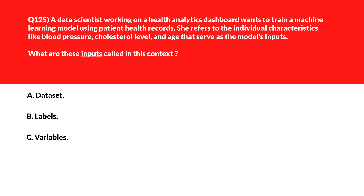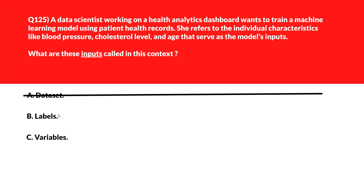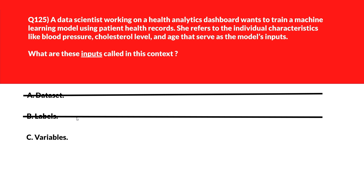Now let's look at the question about inputs to a machine learning model. Option A is Dataset — dataset refers to the full collection of data, not individual inputs themselves, so it's incorrect. Option B is Labels — labels represent the known output values used for evaluation, not what the model learns from. Option C is Variables — variables are the input features provided to the machine learning algorithm to help it learn relationships. Option C, Variables, is the right answer.